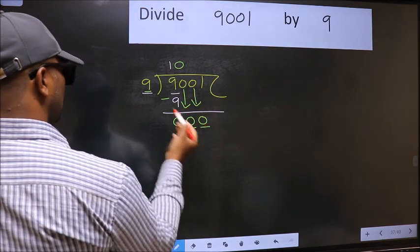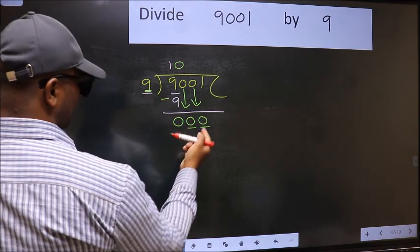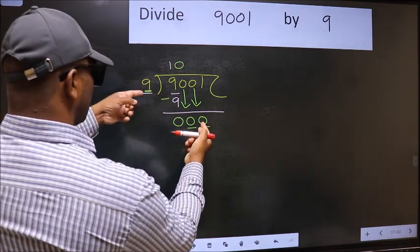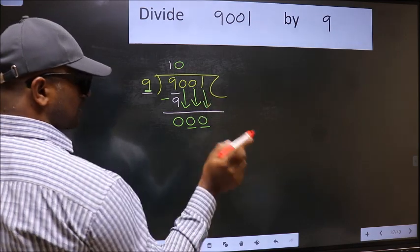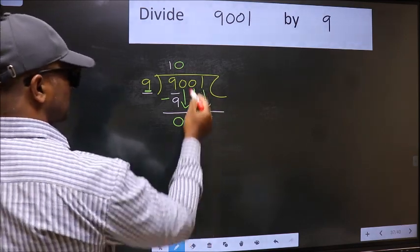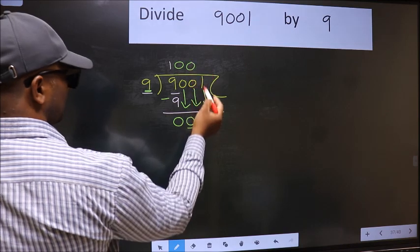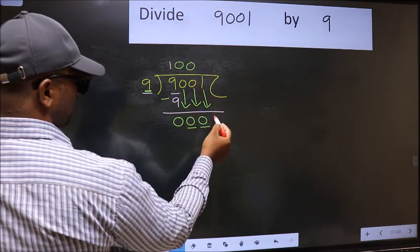Now here we have 0 and here 9. 0 is smaller than 9. So we should bring down the third number. And the rule to bring down third number is we should put 0 here. Then only we can bring this number down.